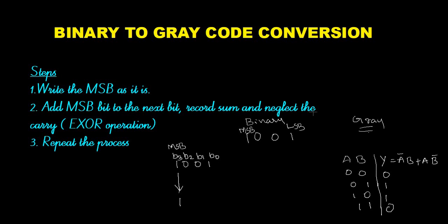Adding the MSB bit to the next bit, record the sum and neglect the carry: 0+0=0, 0+1=1, 1+0=1, 1+1 sum is 0 and carry is 1 — we neglect the carry. This process is the same as the XOR operation. So our second step is performing XOR of the MSB bit with the next bit: 1 XOR 0 = 1, so I am writing 1.